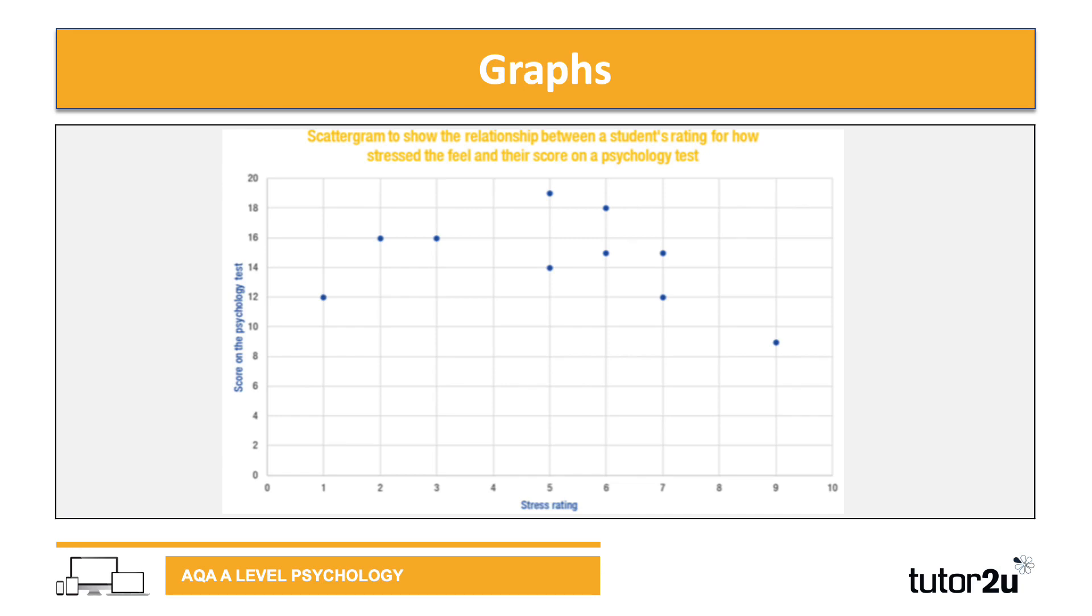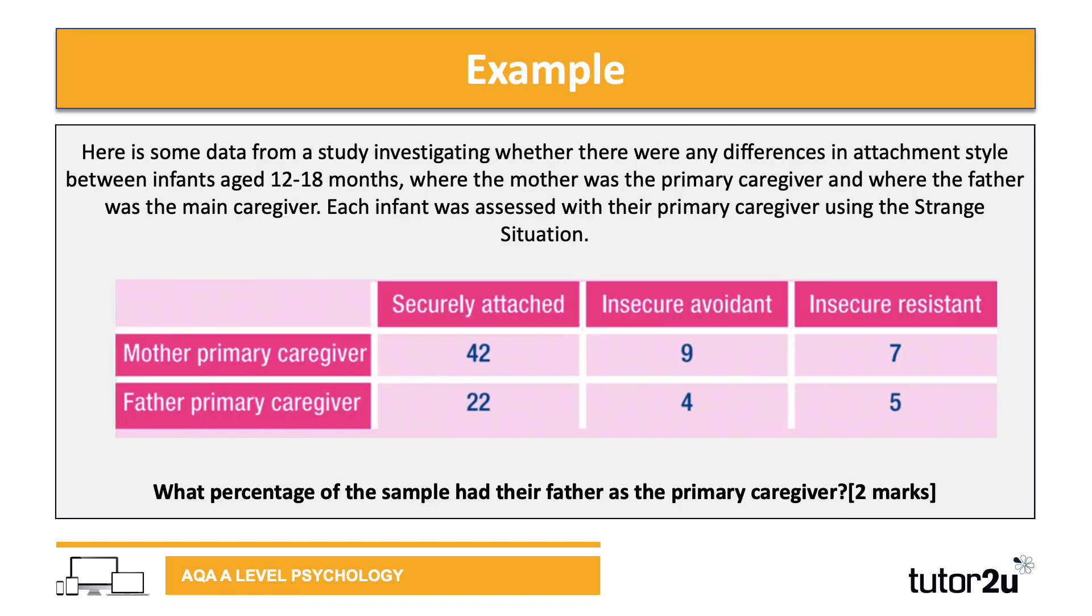Another question here, moving away from graphs. We've got a stem and table of findings. This time the question asks for a percentage - specifically, the percentage of the sample that had their father as the primary caregiver. Read this, pause the video if you wish, and have a go at working out this percentage. We'll go through the answer.